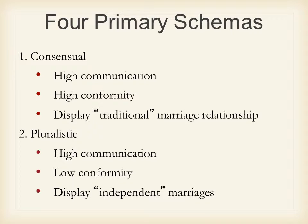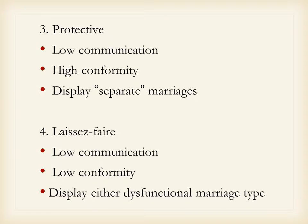The things these two schemas — consensual and pluralistic — have in common is high communication. These are the two most satisfying types of family relationships. If you're going to have a satisfying family life, you have to have high communication — that's what the research shows. These families tend to enjoy each other and feel good about their relationships. Conformity does help a little bit: consensual families and traditional marriage types tend to last and be happier.